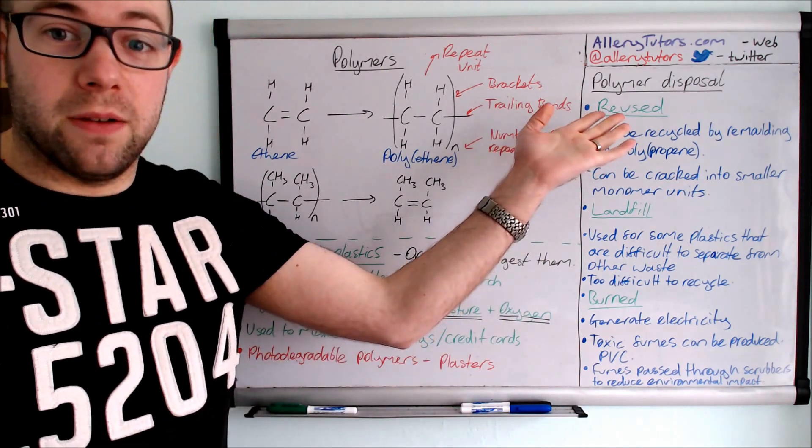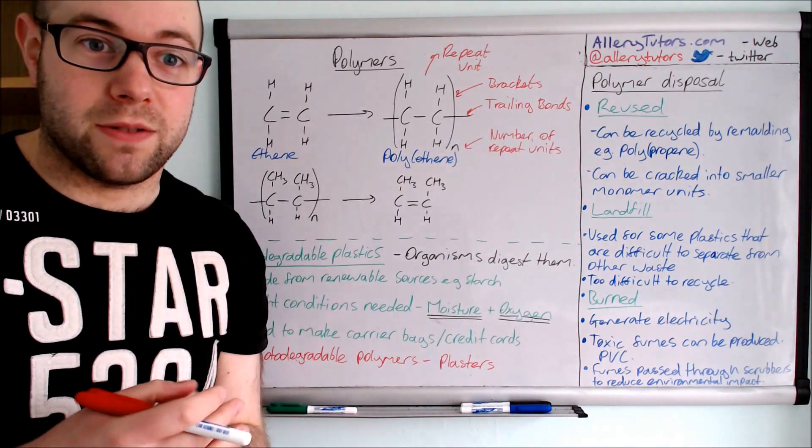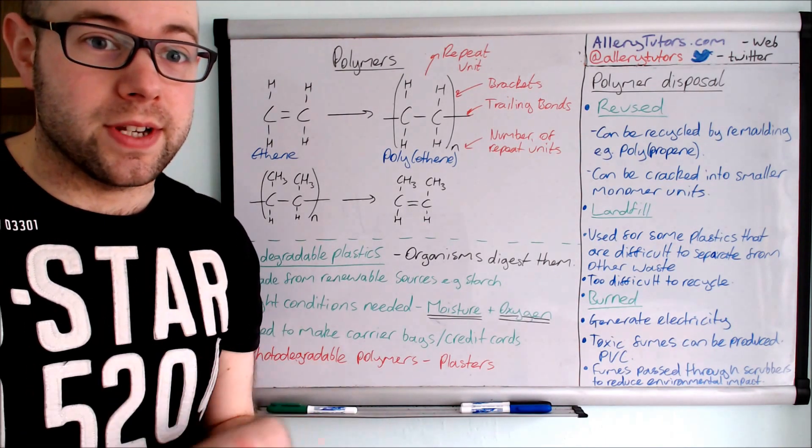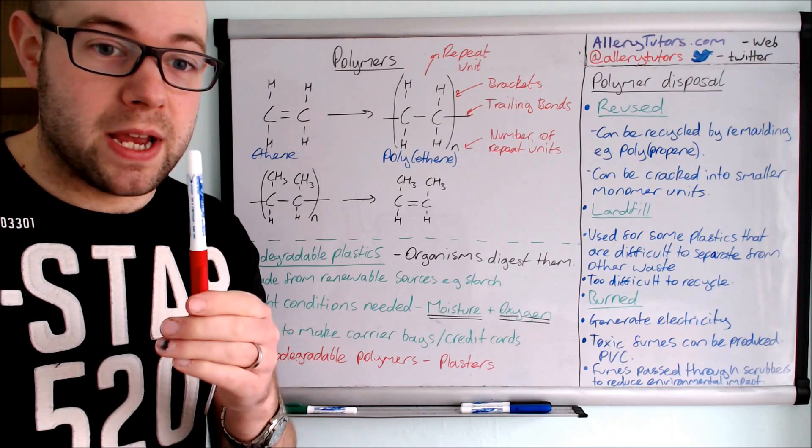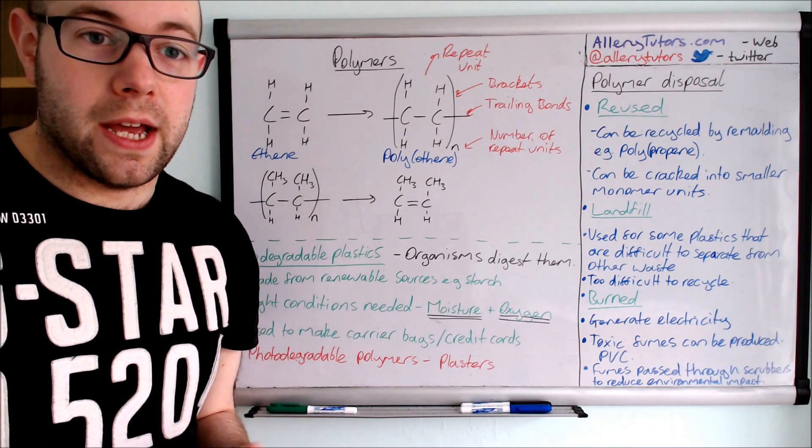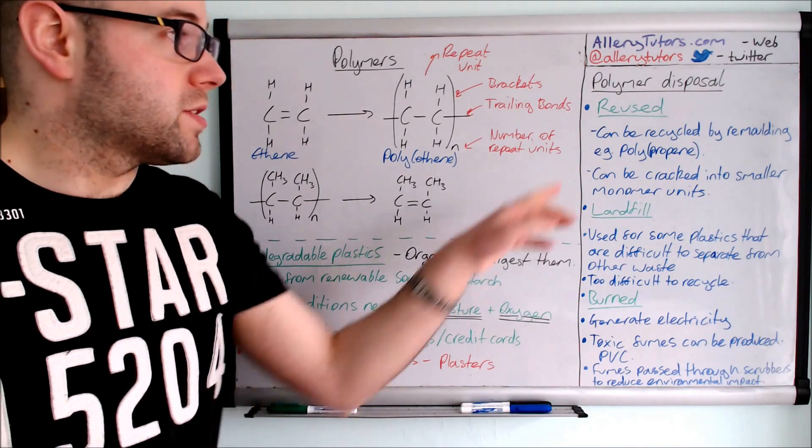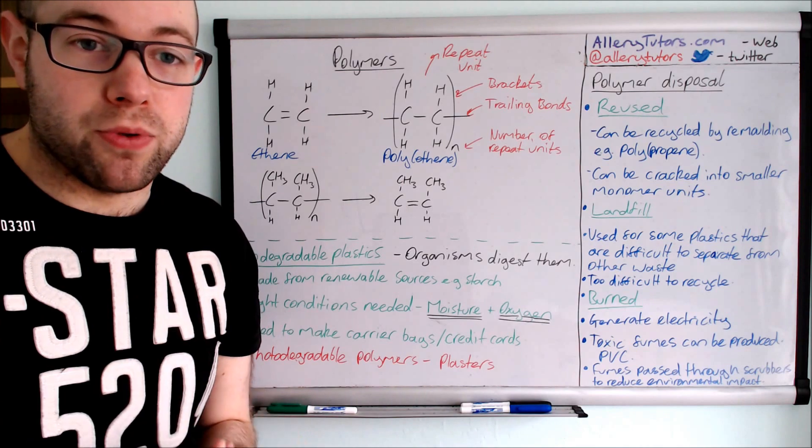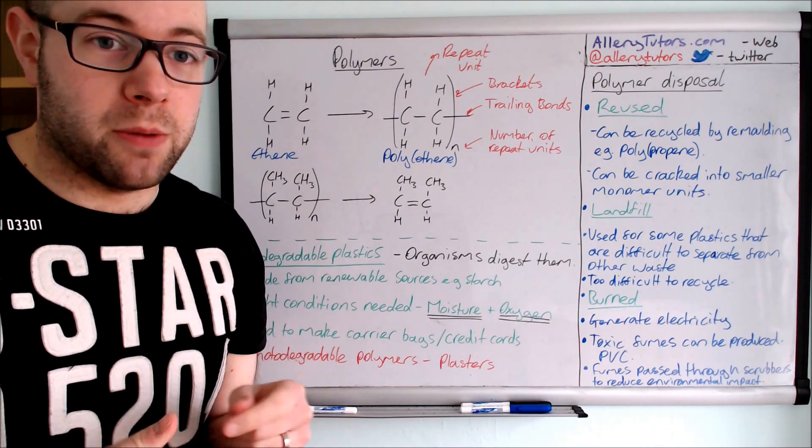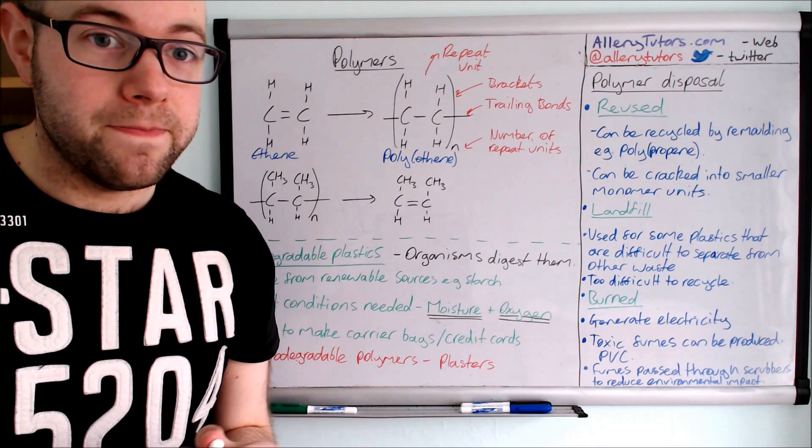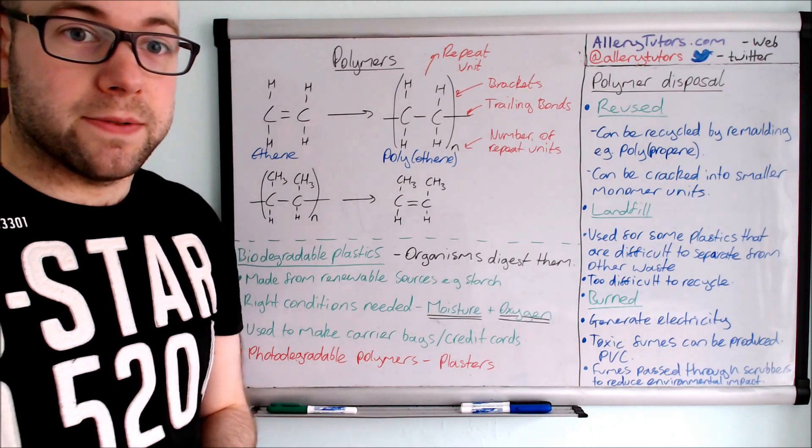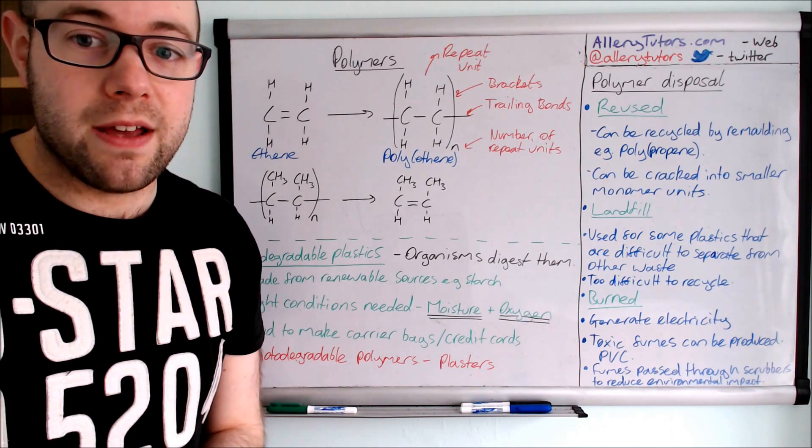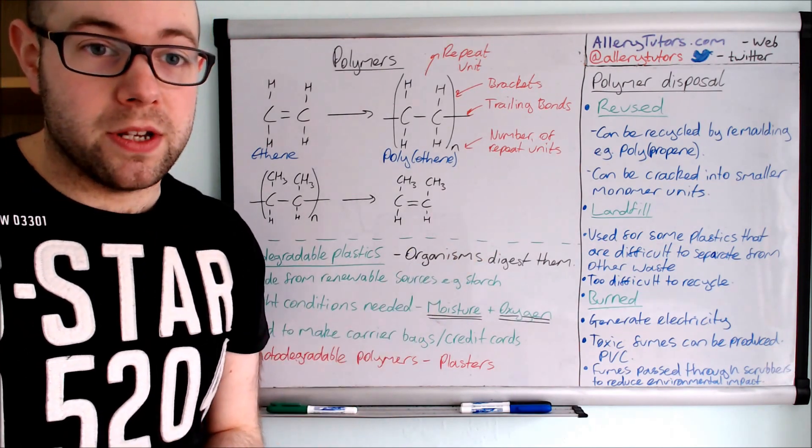For example, we can obviously recycle, and one way is reusing the plastic, and that's one of the most environmentally friendly ways because we're not using up crude oil to make plastic things like this and we're actually reusing items that we've already made. So they can be recycled by remolding them. For example, polypropene can be remolded. We melt it down, chip it up, and then remold it into something new. Again, we're not using scarce resources like crude oil to do that. We're just using something that's already been used, so there's an advantage there. And it can be cracked into smaller monomer units as well.